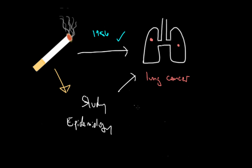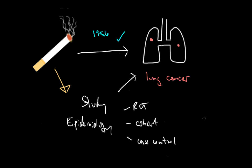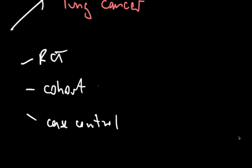There are many different types of epidemiological studies: randomized control trials (RCT), cohort studies, and case-control studies. Each has their pros and cons, but in this video we're going to take a step back and talk about some more general principles of these studies.